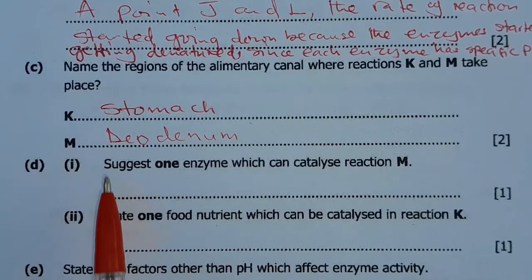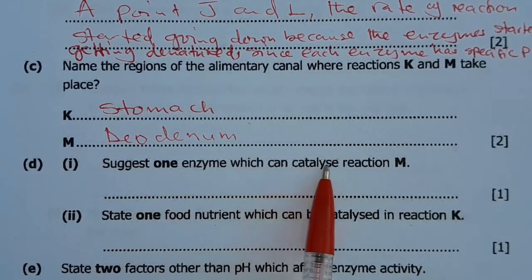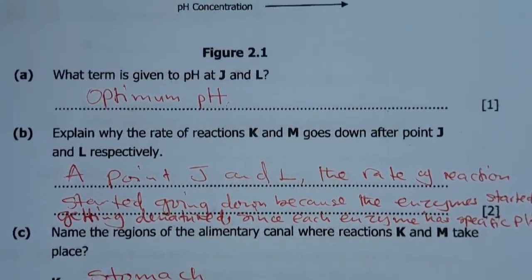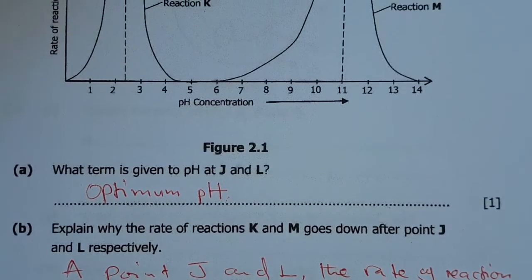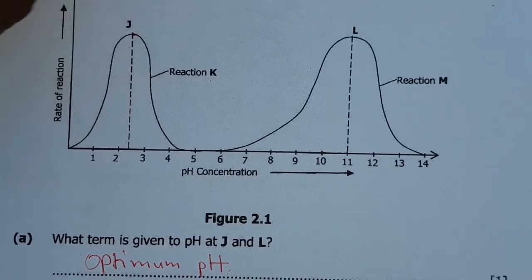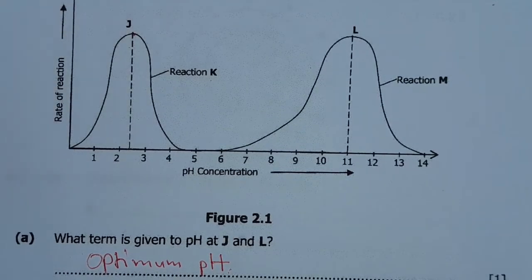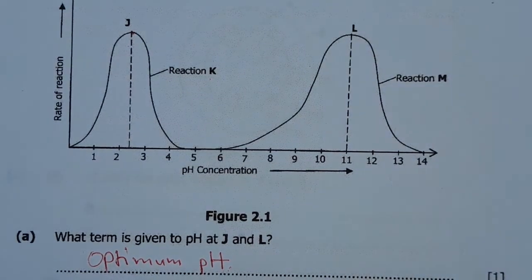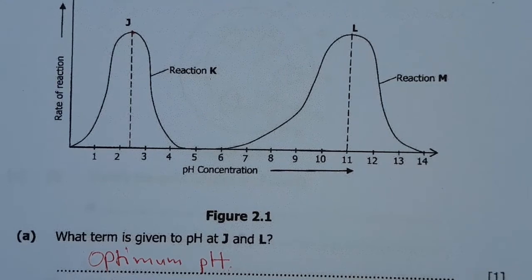Then D1, suggest one enzyme which can catalyze reaction M. Reaction M, we said reaction M is under alkaline. So now what enzymes act in the duodenum? In the duodenum where it is alkaline. What enzyme?